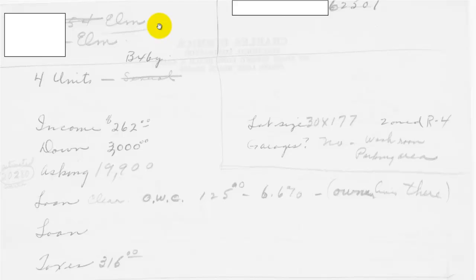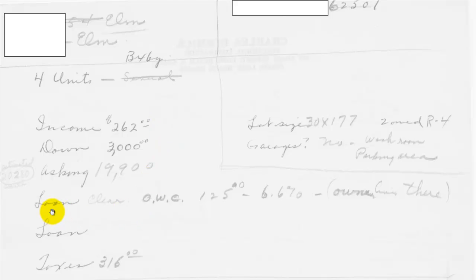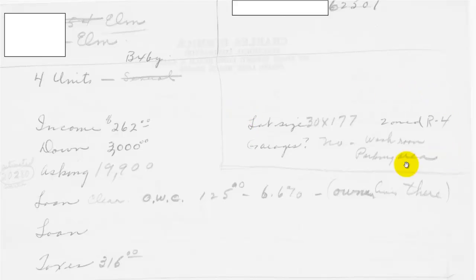Let's take a quick look at this. It's fairly standard. He would draw a line across the top horizontally and then a vertical line in the middle. On the left side he would put the property address, and on the right side he would put the contact information for the broker or the seller. Then on the left side of the paper he would list the financials of the property: income, down payment, asking price. In this situation we see that the loan is clear — OWC, owner will carry, $125 a month at 6.6%. On the right side you can see some descriptions of the property.